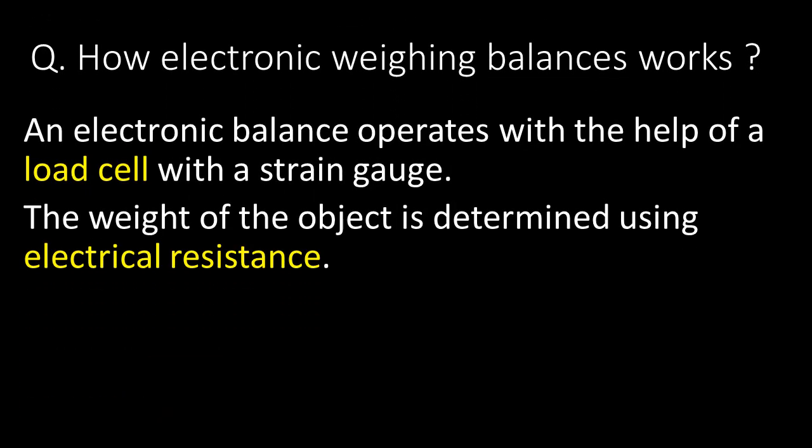This is a technical and important question: how do electronic weighing balances work? An electronic balance operates with the help of a load cell with a strain gauge. The weight of the object is determined by using electrical resistance.